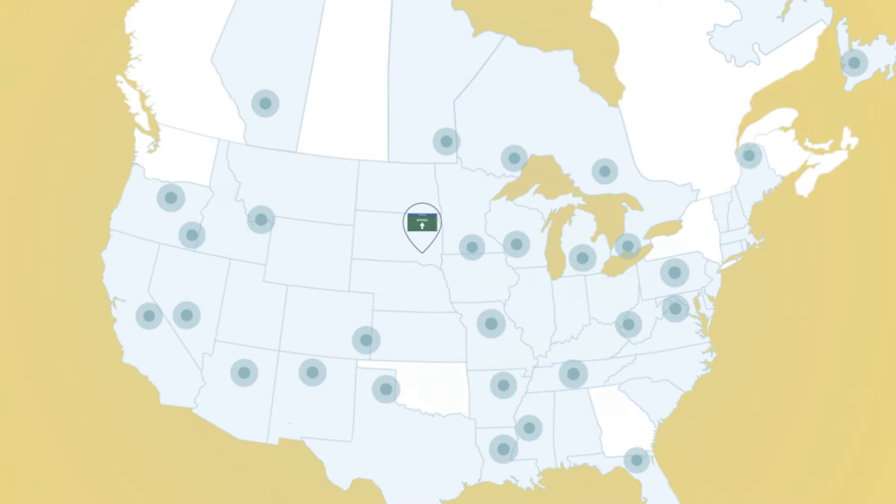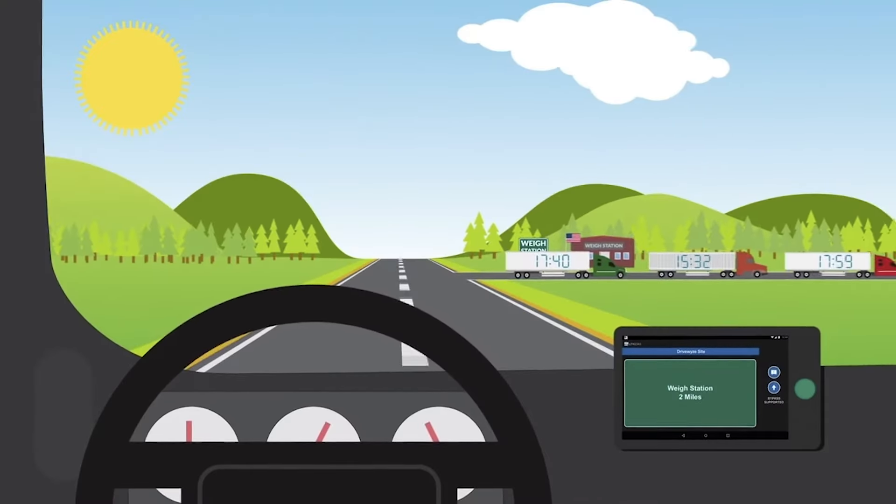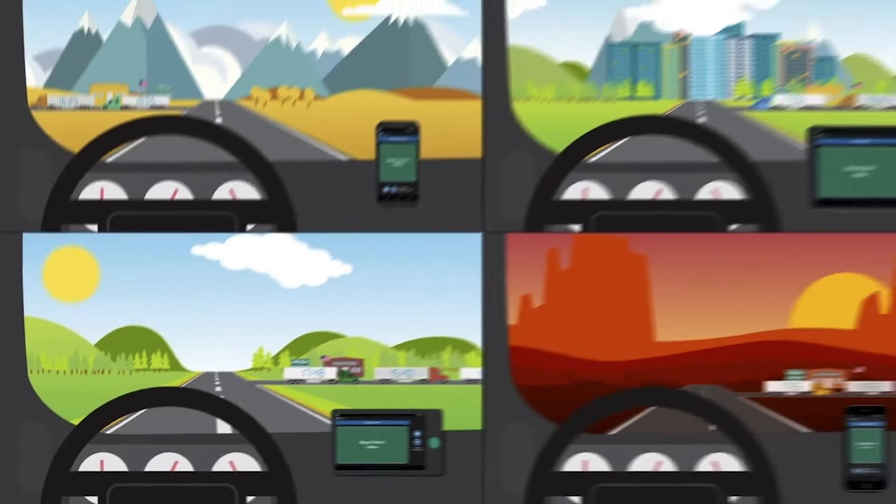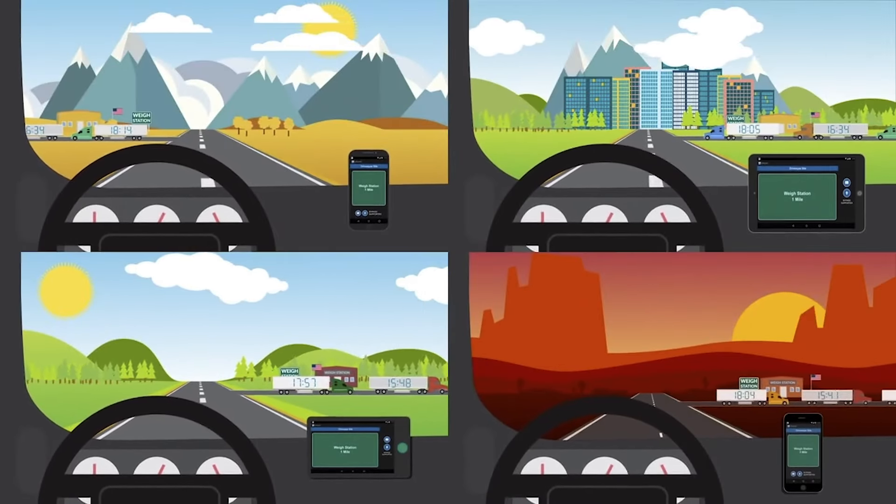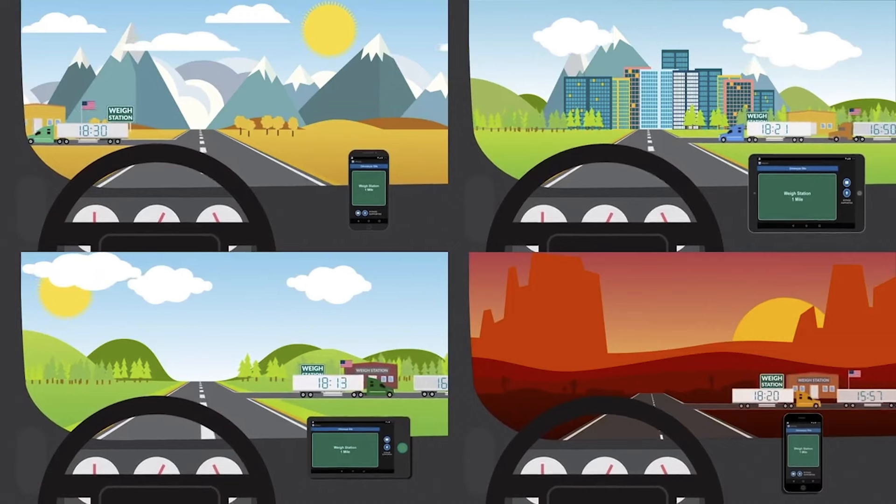With DriveWise, you can expect to bypass scales up to 98% of the time, depending on your carrier safety score and on each site's screening rules. You won't need a transponder or any other additional hardware to start receiving bypasses. And the app is completely hands-free, so it's safe and legal to use while you're driving.